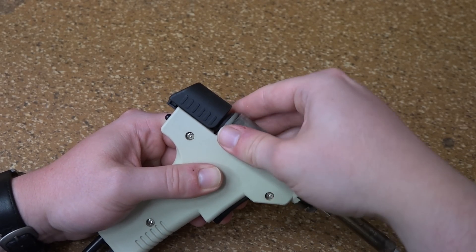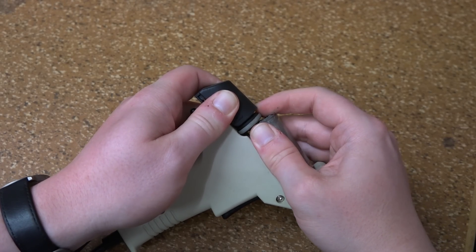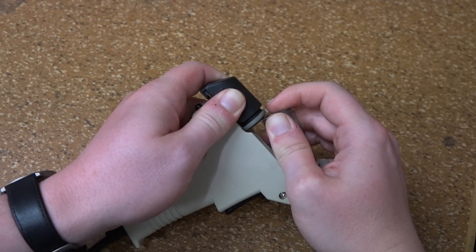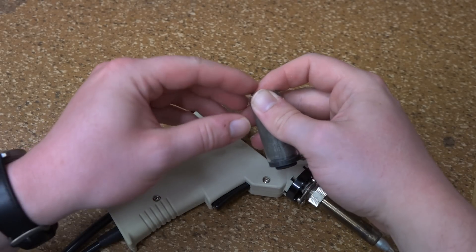But you want to be careful, because if you break the glass tube, you can't get a replacement for that. You will have to get a whole new gun. So, with the application of some force, this finally comes out.